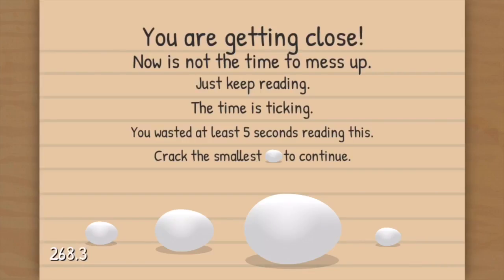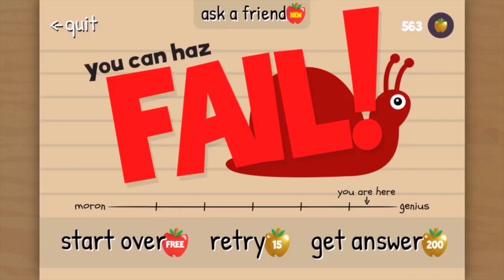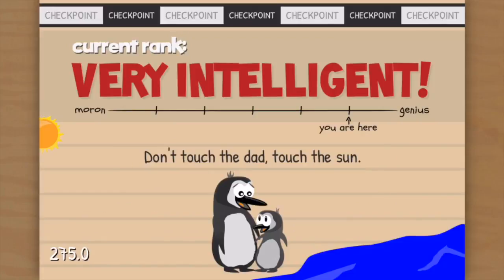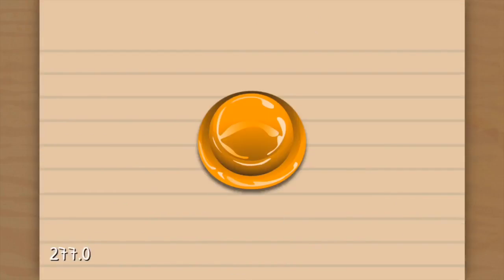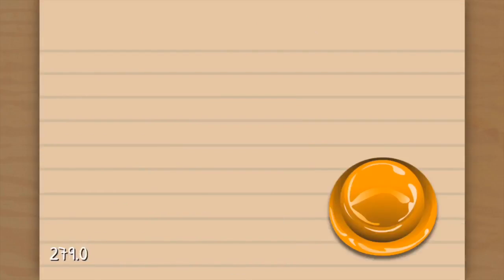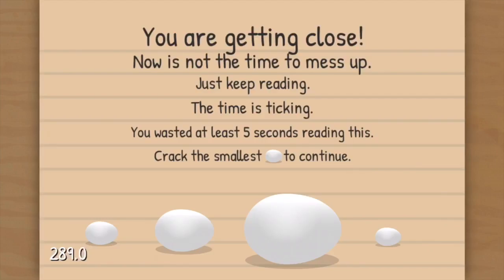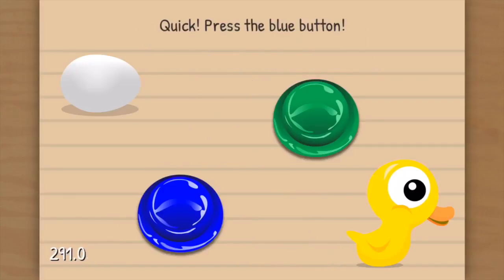Almost there. You're getting close. Now's the time to mess up. Just keep reading. The time is ticking. You wasted at least five seconds reading this. Crack the smallest egg to continue. I failed. Oh, I think it was actually the one that was actually near the letters. So hold on a second. This is gonna turn green again. Or blue or something. No, it's green. You can't fool me because I'm a trickster. You can't trick a tricky trickster. That's what I'm saying. There you go, the one in the middle. Yeah, I did it good.